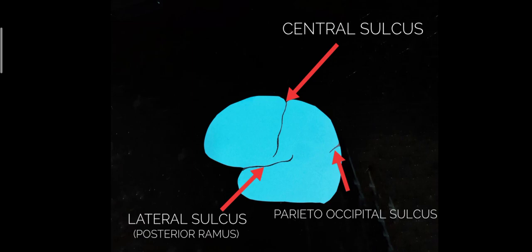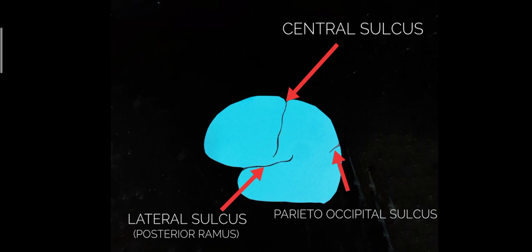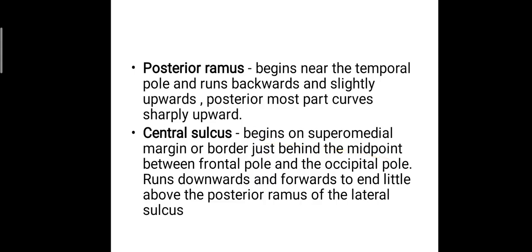These are the two points to remember about the prominent sulci. The posterior ramus of the lateral sulcus runs backwards and slightly upwards, and the posterior most part runs sharply upwards. The central sulcus starts just before the midpoint between the occipital pole and the frontal pole, runs downwards and forwards, and ends a little above the posterior ramus of the lateral sulcus.